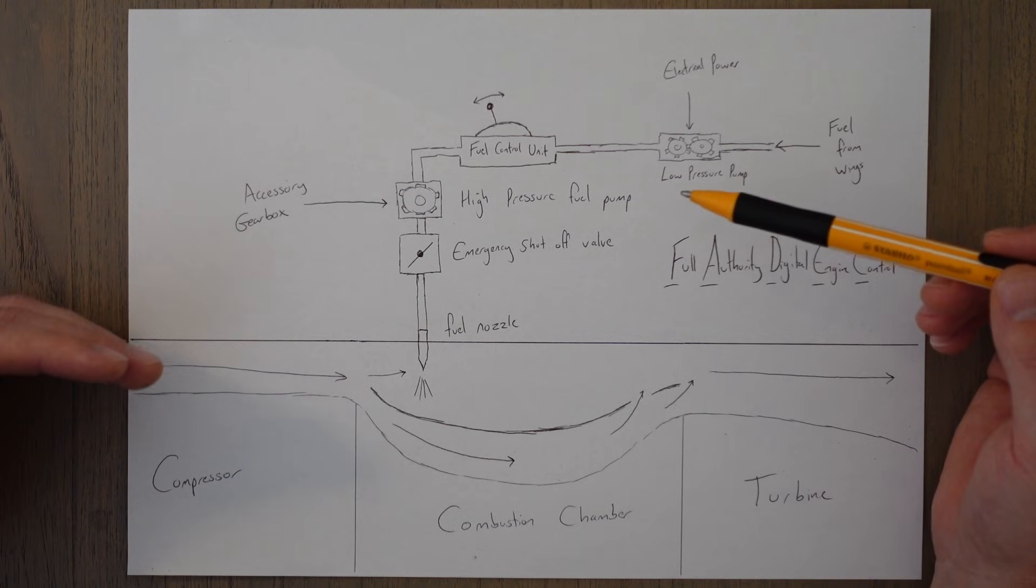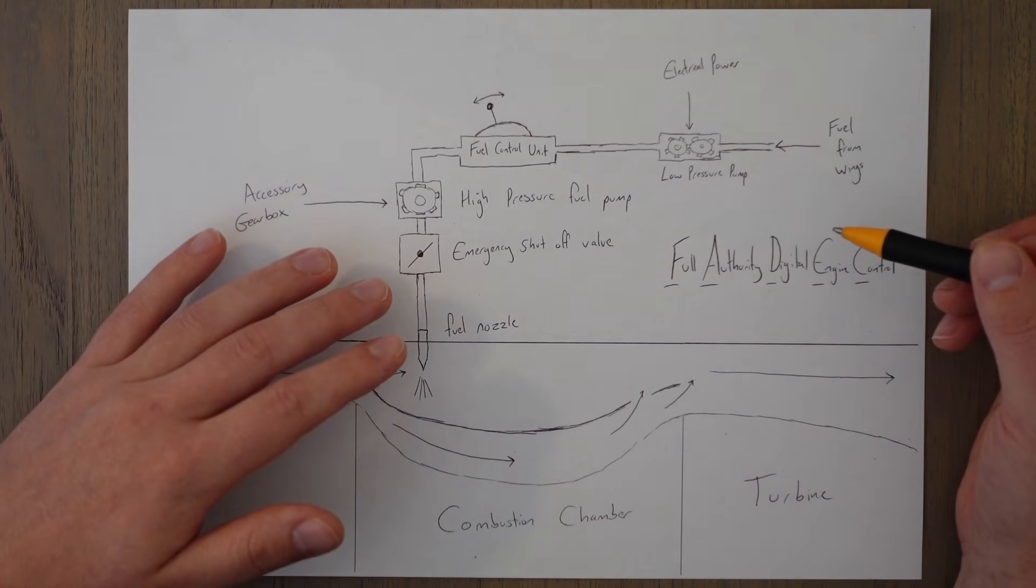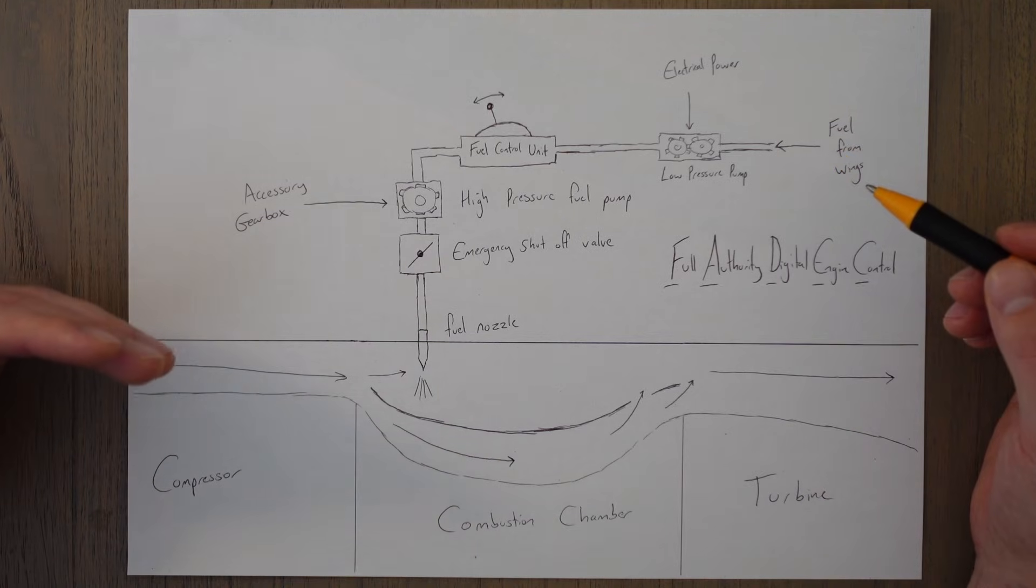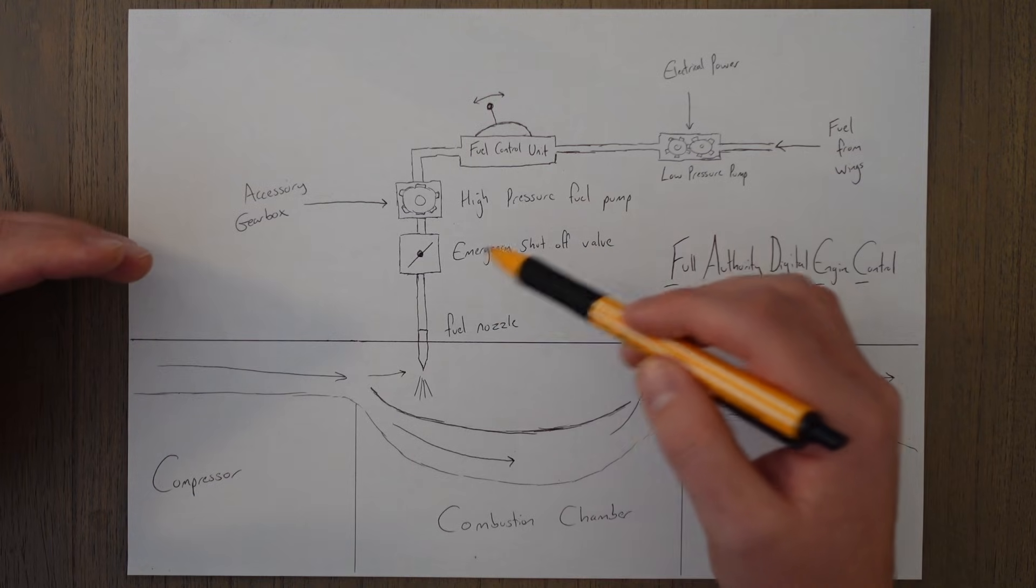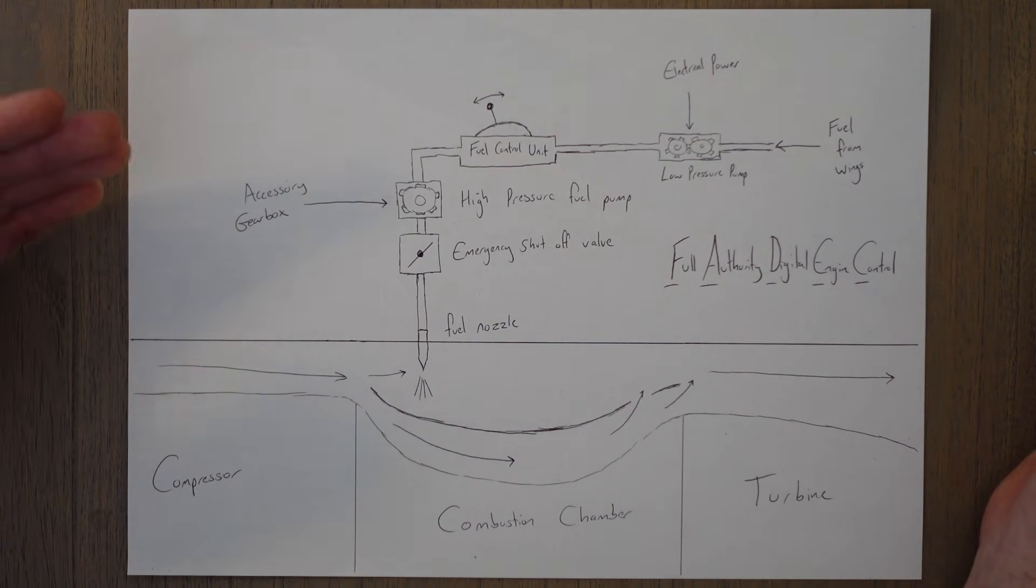FADEC is a digital control system that performs complete engine management. It converts a lot of the mechanical and environmental measurements from the engine into electric signals that are then processed by an electronic engine controller, which will then send commands to a fuel metering unit which controls the amount of fuel sprayed into the engine to achieve the desired effect while keeping all of the parameters within limits.